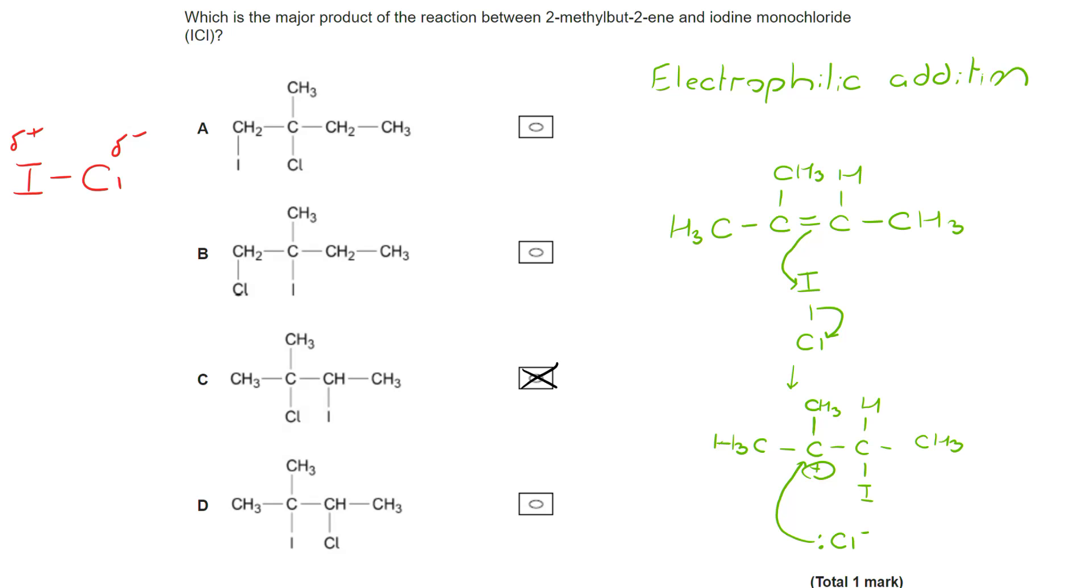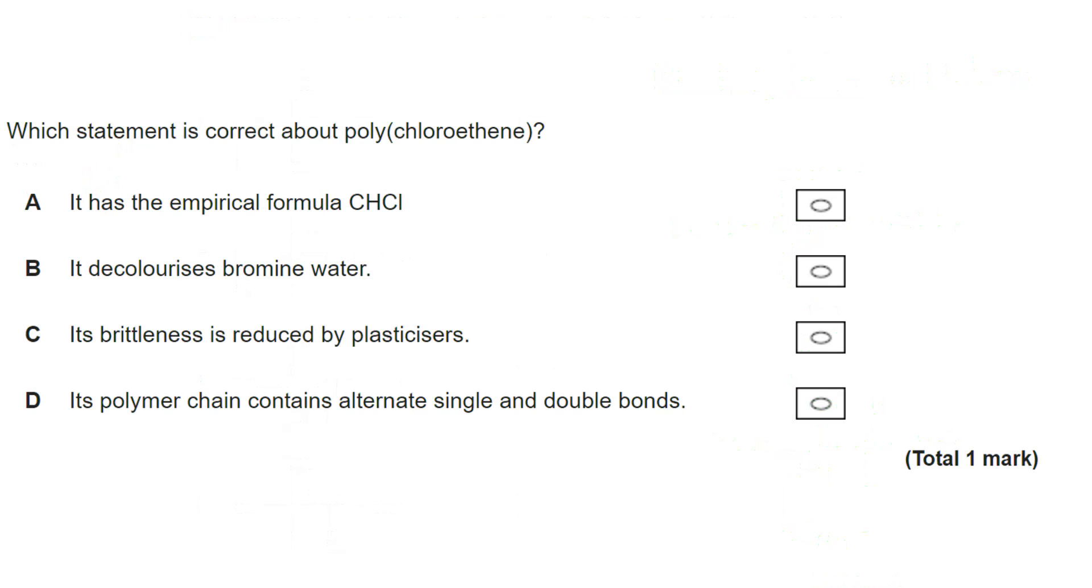Next question. So this is a question that relates to polymers. We can take a look at some of the answers here. Its polymer chain contains alternate single and double bonds. Well, no, this is an addition polymer. And what that means is that the double bond breaks. So we end up with only single bonds in our polymer chain.